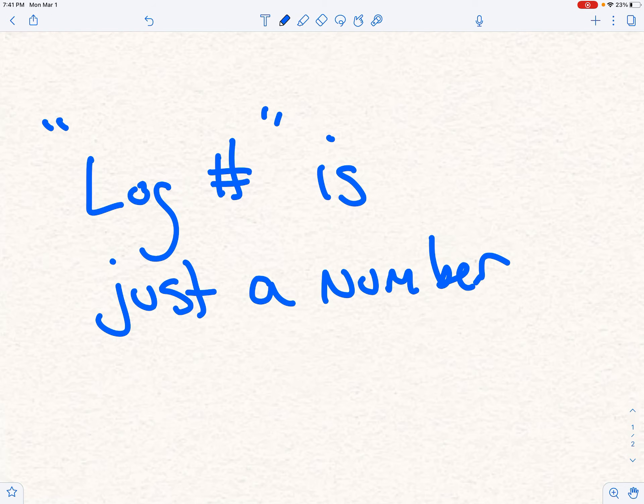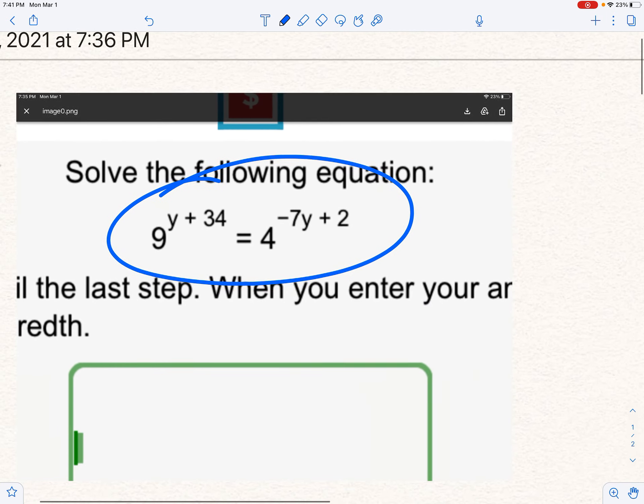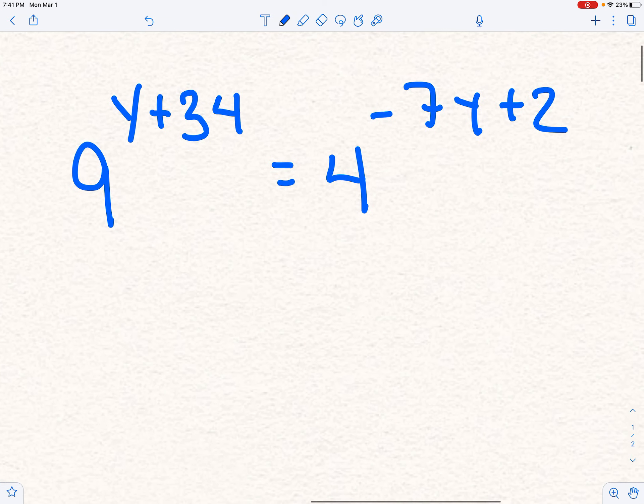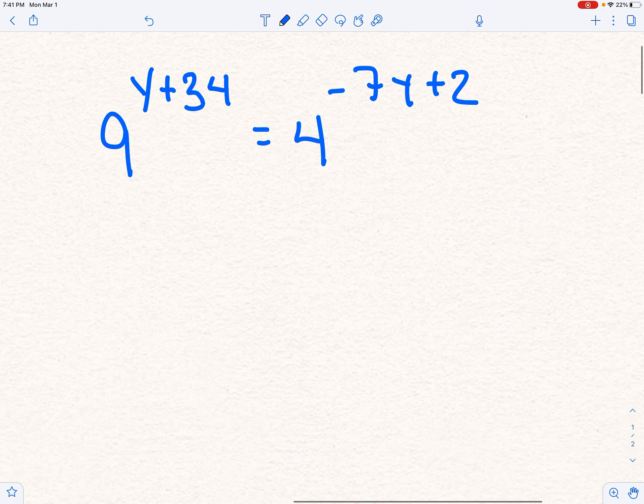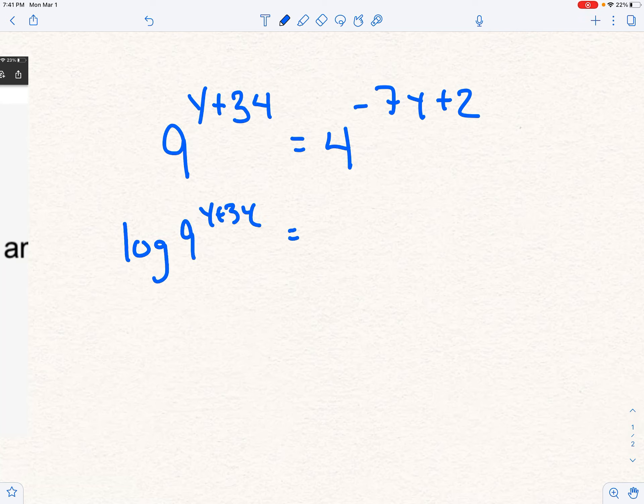So let's go ahead and take a look. Here is a sample question. So here's that sample question that was emailed in. I simply rewrote it so I would have more space. And here we go. So the first thing that I observe is I have variables in my exponent. So I'm going to take the log of both sides, and then I'm going to move those exponents. So log of 9, y plus 34.